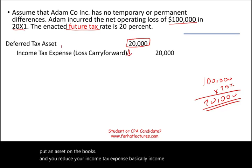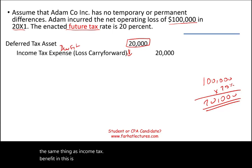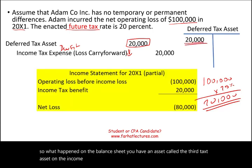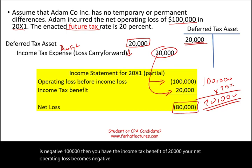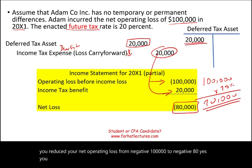Income tax expense credit is the same thing as income tax benefit, and this is from the loss carry forward. So you have an income tax benefit. On the balance sheet, you have an asset called the deferred tax asset. On the income statement, your operating loss is negative $100,000. Then you have the income tax benefit of $20,000, so your net operating loss becomes negative $80,000. You reduced your net operating loss from negative $100,000 to negative $80,000. You are still negative; nevertheless, you are better off reporting negative $80,000 — in other words, you have a benefit of $20,000.